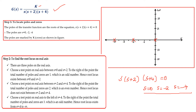Choose a test point P1 between the poles 0 and -2. To the right of this point, the total number of poles is 1 and there are no zeros. Since the number is odd, root locus exists between 0 and -2.